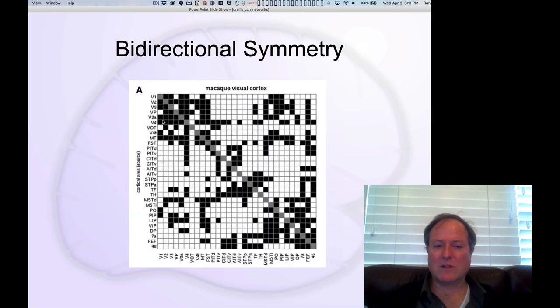Another really important feature, which I alluded to, is that the brain is bidirectionally connected. So whenever you do have one of those feed-forward pathways going up from one area to another, so for example from V1 to V2, you also have a reciprocal projection from V2 coming back down to V1.